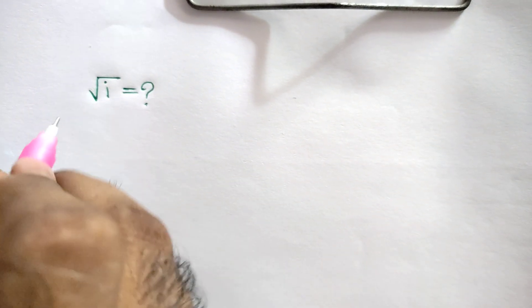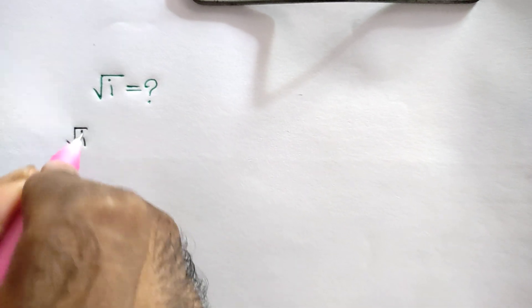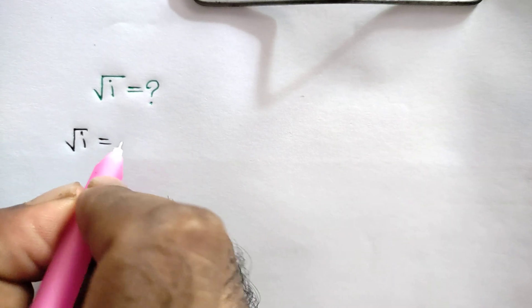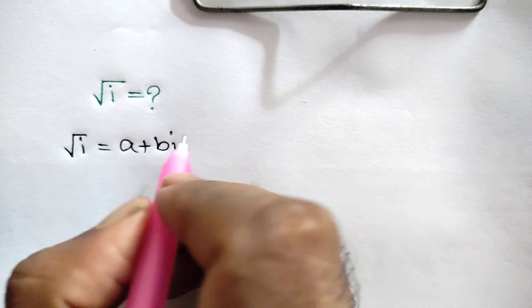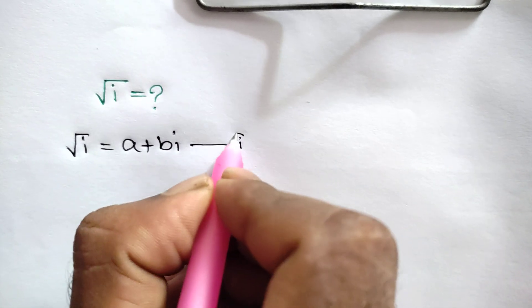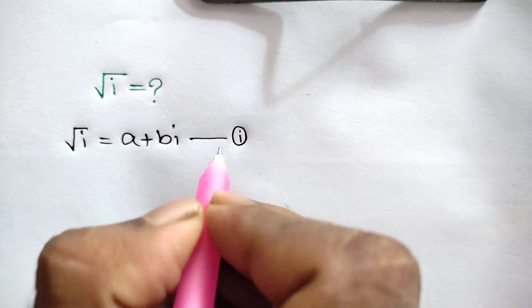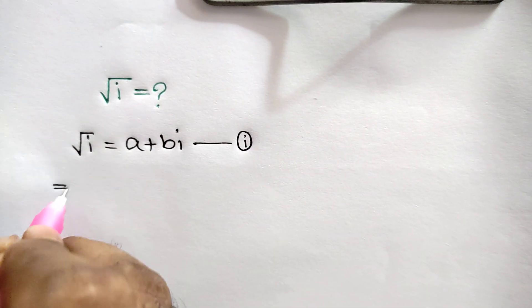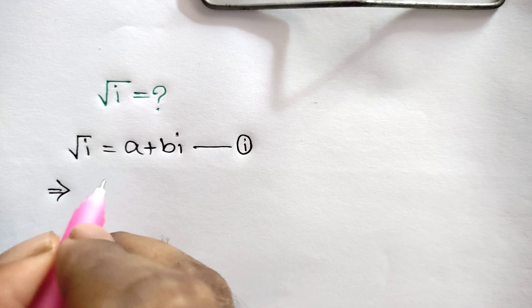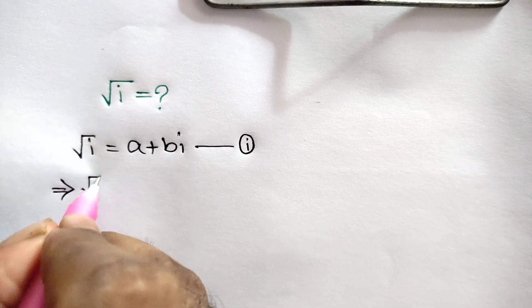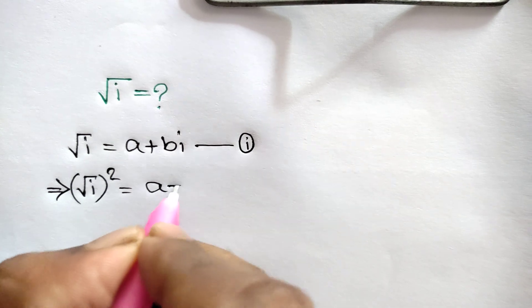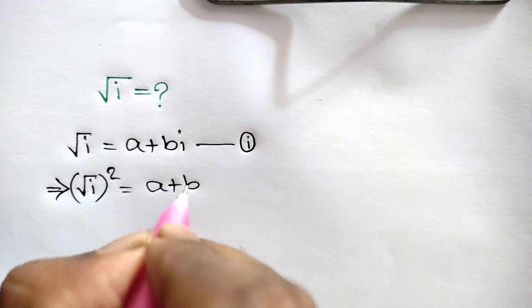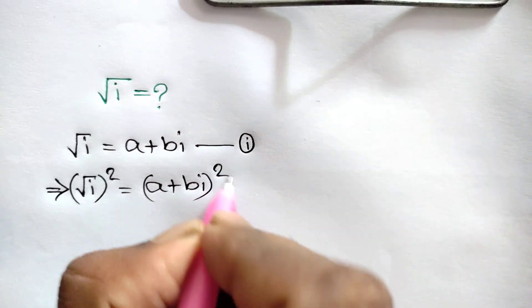Let's suppose the square root of i is equal to a plus bi — this is called equation number 1. Squaring both sides, we can write: square root of i, whole squared, is equal to (a + bi) whole squared.